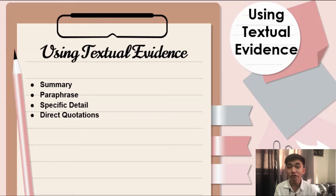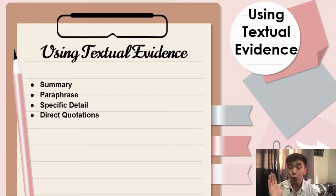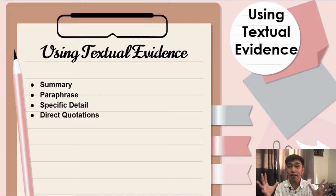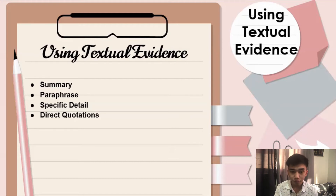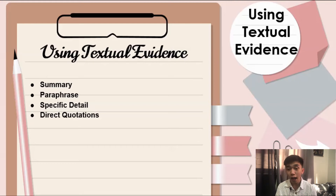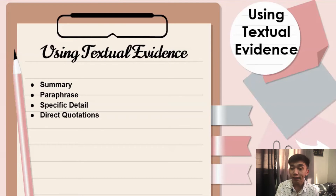Next is the use of textual evidence. The use of textual evidence can illustrate and support the ideas you are developing in your essay. First is the summary — a brief statement of the main points, encapsulating the work. Paraphrase is to put someone else's words in your own words. Specific detail: various types of details from the text lend concrete support to the development of the central idea of your literary analysis essay. And we also have direct quotations, including using and punctuating direct quotations.